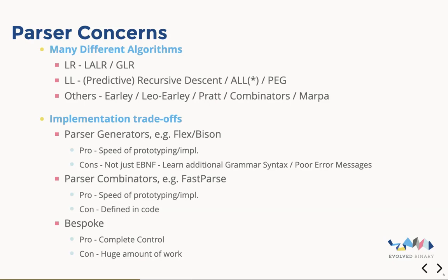Another option is parser combinators — a fairly new approach often used for implementing small domain-specific languages. It's a favorite of mine; they're very easy and fast to construct. Everything is written in the host language — C++, Scala, Java, or whatever. The disadvantage is that you don't have a clean separate grammar you can refer to. The other approach is a bespoke one where you decide to write your own lexer and parser from scratch — typically an LL predictive recursive descent parser. The advantage is that you have complete control over everything, so you can ensure really good error messages and tune the performance. The disadvantage is that it can be a huge amount of work, and XQuery has quite a large grammar — by no means a small task.